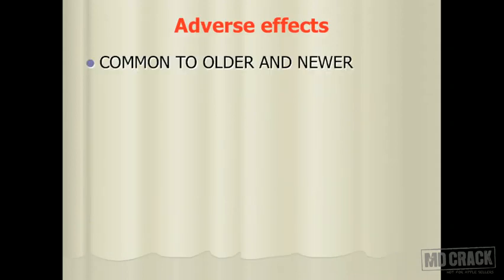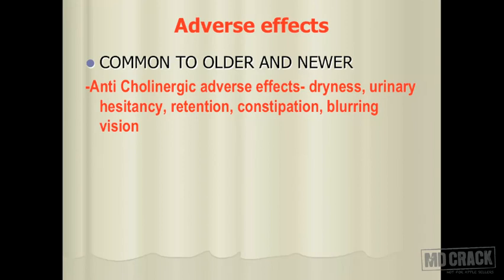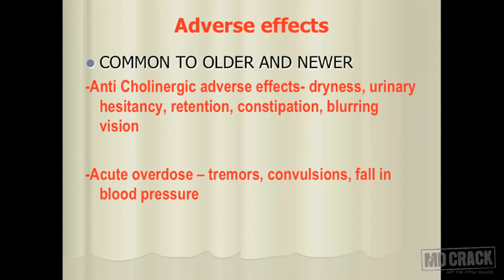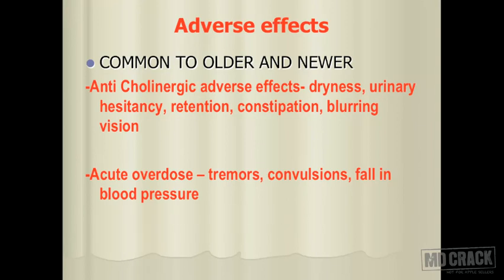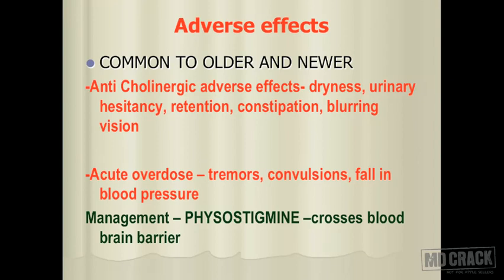The adverse effects are divided into those common to older and newer antihistamines, and those specific to a particular group. Adverse effects common to both include anticholinergic effects — because many have atropine-like action — causing dryness of mouth, retention of urine, hesitancy, constipation and blurring of vision. In large doses, acute overdose can lead to tremors, convulsions and fall in blood pressure. To manage overdose, physostigmine is given as it crosses the blood-brain barrier and reverses the atropine-like effects.